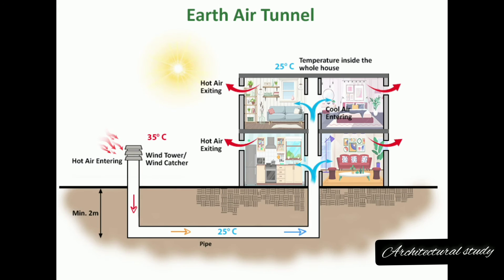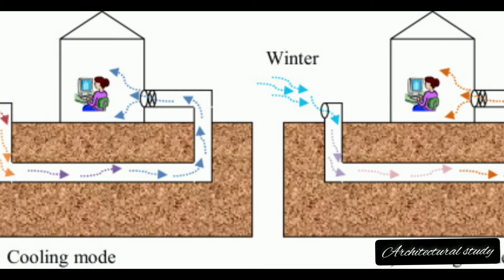Classification of EAT Heat Exchangers — Closed-Loop: Air circulates in a sealed loop, preventing contamination. Open-Loop: Air directly interacts with the soil, requiring filtration for dust and pollen control.